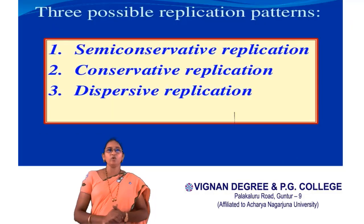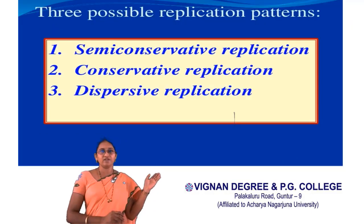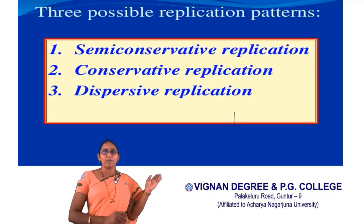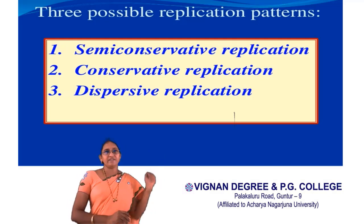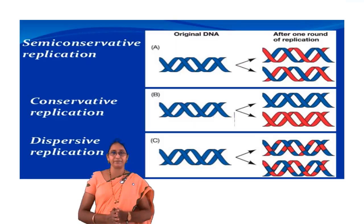Three types of replication models have been proposed: semi-conservative replication, conservative replication, and dispersive replication.